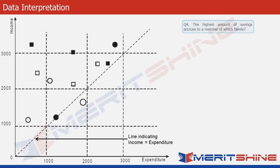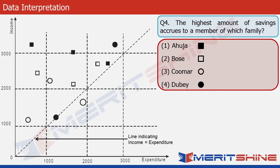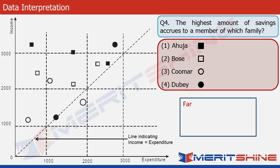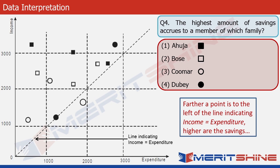The last question asks which family's member has the highest amount of savings. As established, the farther a point is from the diagonal line, the higher the savings. Looking at the graph, one black square is at a much greater distance from the diagonal line compared to any other point. Since it's a black square, it belongs to the Ahuja family. So the answer is option one.